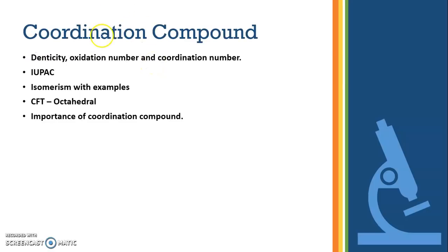Coming to coordination compound, one of the very important chapters in your inorganic chemistry. From coordination compound, you have to do denticity, oxidation number, coordination number, IUPAC, isomerism with examples, CFT, octahedral, importance of coordination compound.